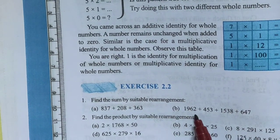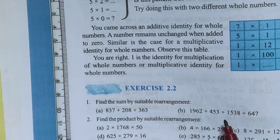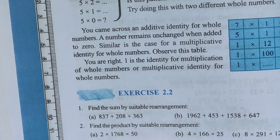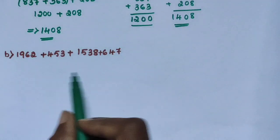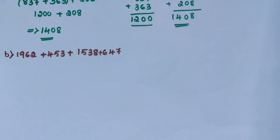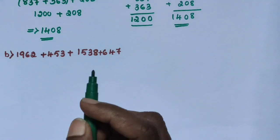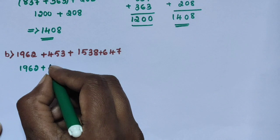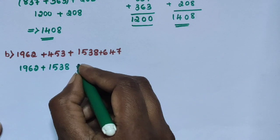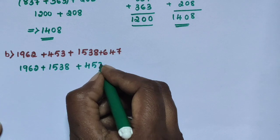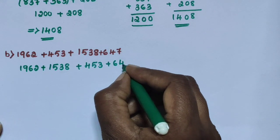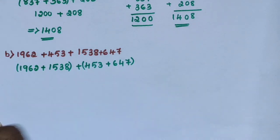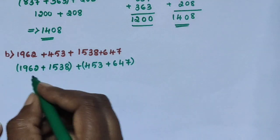Next, sub-question B: 1962 plus 453 plus 1538 plus 647. Rearrange the numbers and add these 4 numbers. First, group 1962 plus 1538 as one group, and 453 plus 647 as another group. Add these 2 numbers in each group.